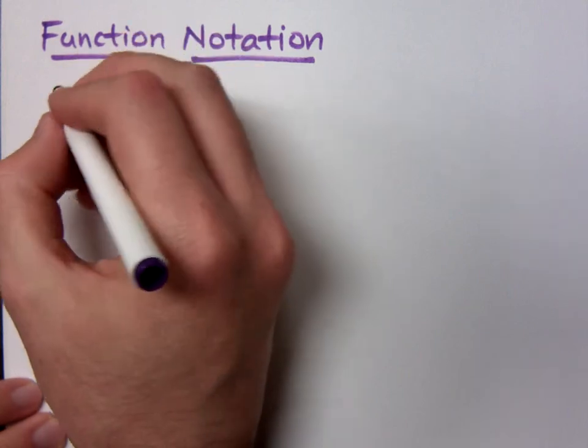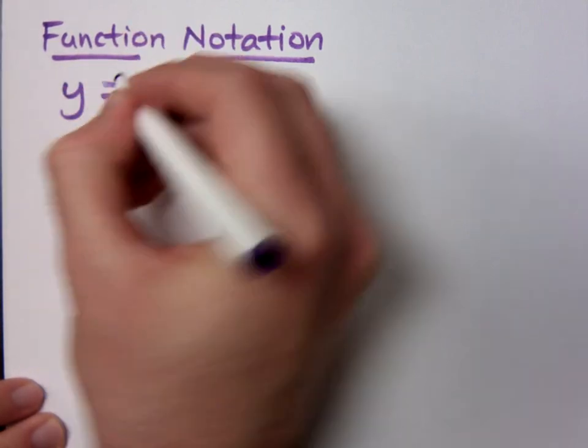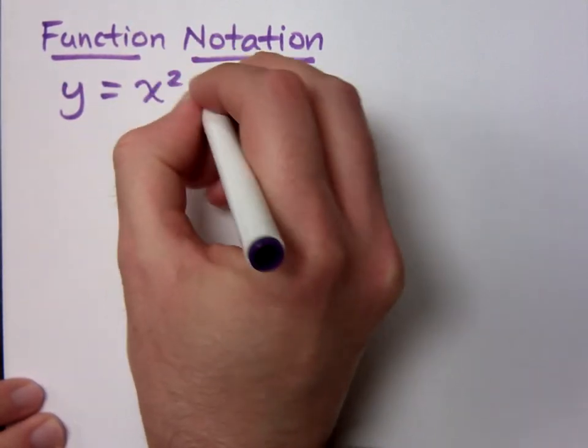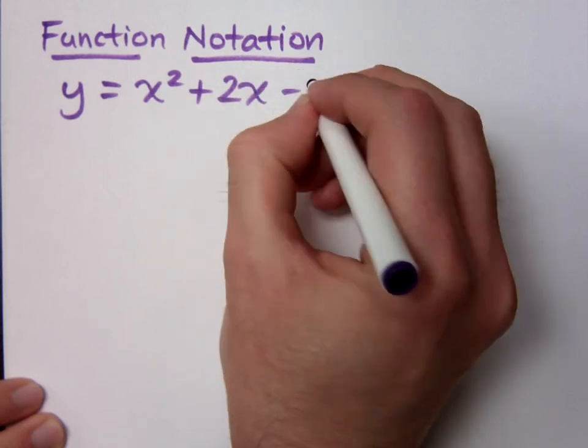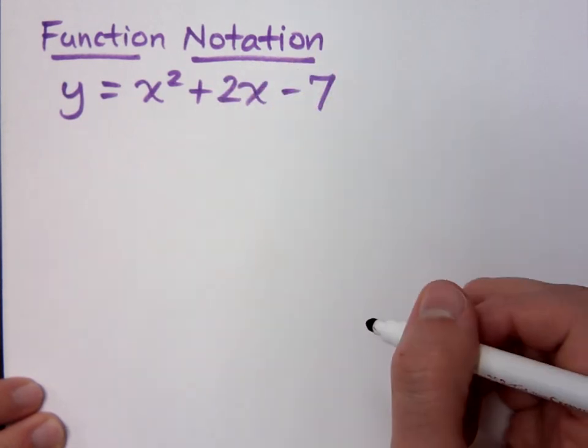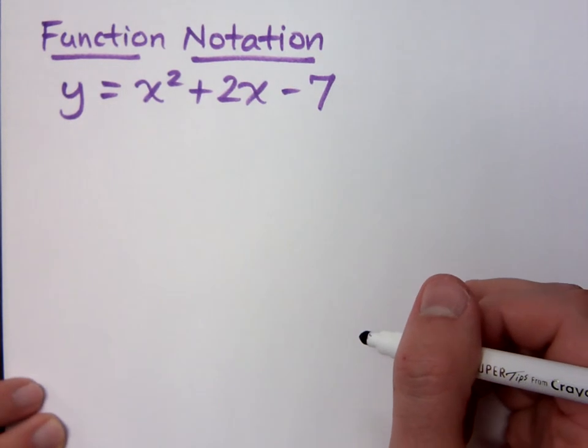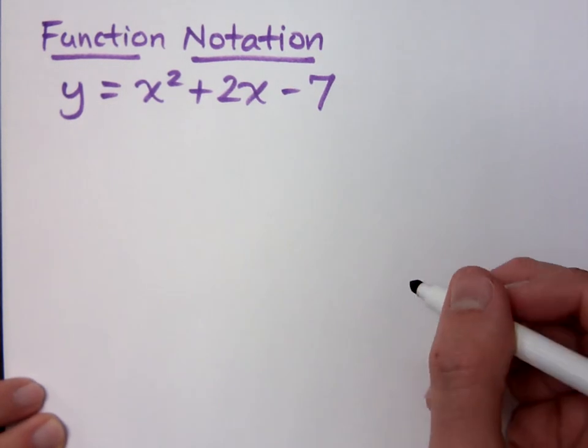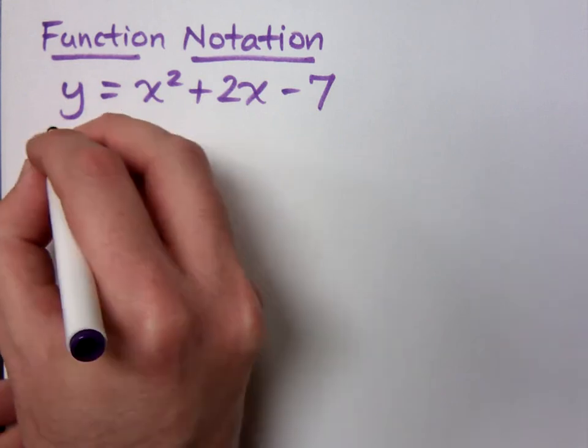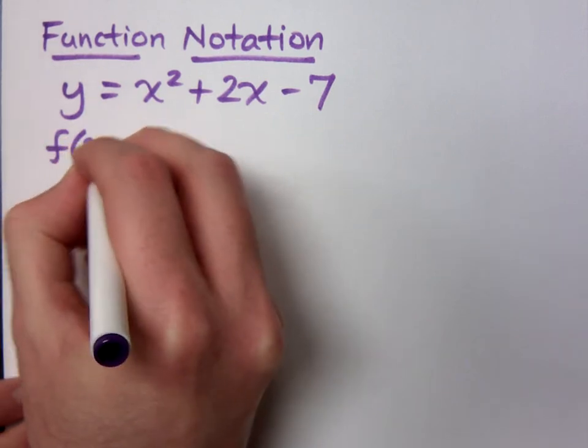Do you guys remember before you would have something like this? y equals x squared plus 2x minus 7, something like that? We're not going to do that anymore. Instead of writing y, what will I write? I'm going to write this.